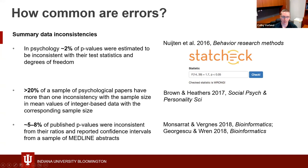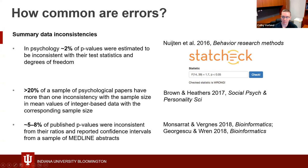The first example, in psychology, about 2% of p-values were estimated to be inconsistent with their test statistics and degrees of freedom. This work was found using automated screening of the literature by a tool called StatCheck, which you can run on your own. It looks for summary statistics reported in APA format, and you can see the example on the slide.